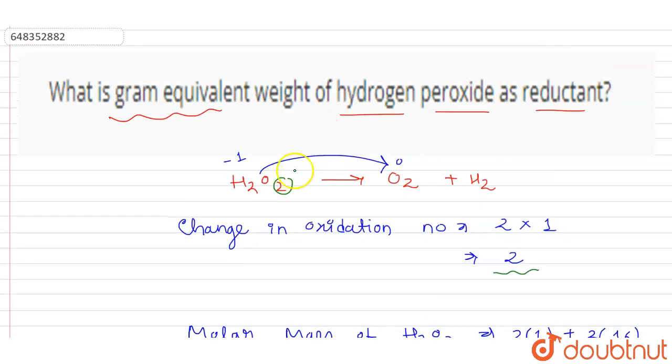How can we say it acts as a reductant? The oxidation number increases, so it is oxidized, and a compound which is oxidized acts as a reductant.